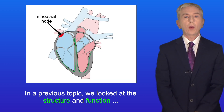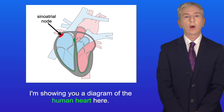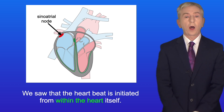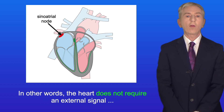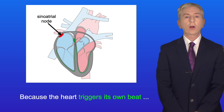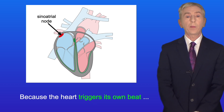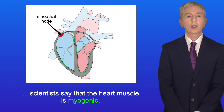In a previous topic we looked at the structure and function of the human heart. We saw that the heartbeat is initiated from within the heart itself — the heart does not require an external signal in order to beat. And because the heart triggers its own beat, scientists say that the heart muscle is myogenic.